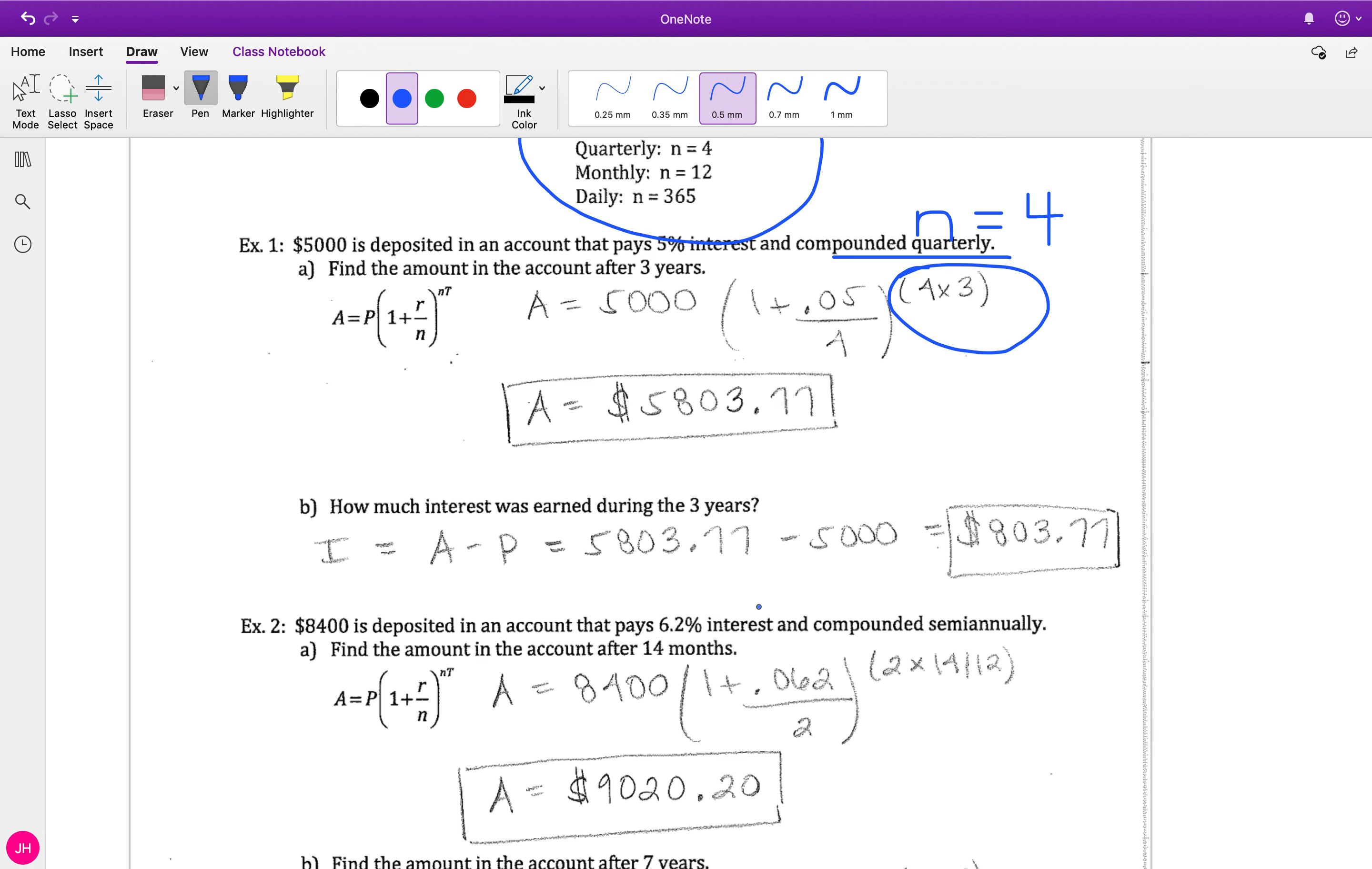I ended up with five thousand eight hundred three dollars and seventy seven cents. I started with the five thousand. So the difference between those, by definition, is the interest. I started at five thousand, I grew to this much, and so that growth is the interest. My interest is eight hundred three dollars and seventy seven cents.